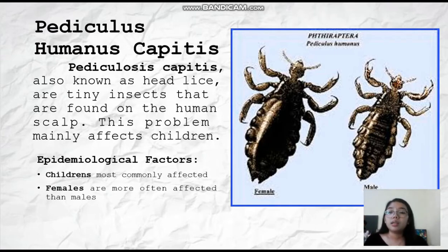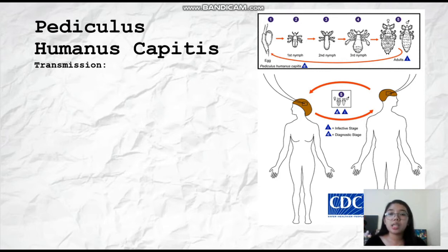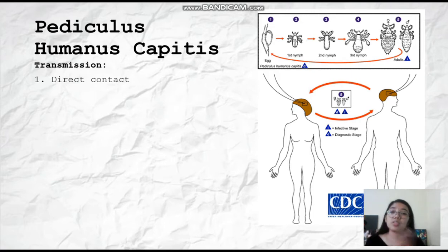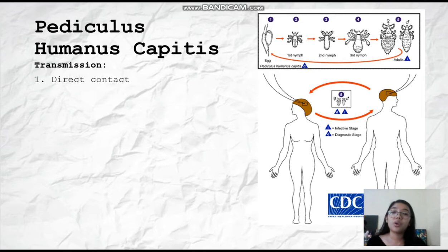The mode of transmission: since head lice cannot jump and can only crawl a limited distance outside the human scalp, the first mode is direct contact — skin to skin or physical contact. For example, when children are playing or even watching videos on a cell phone, they tend to be close to each other, and in that way the head lice can crawl onto another person's hair or scalp.